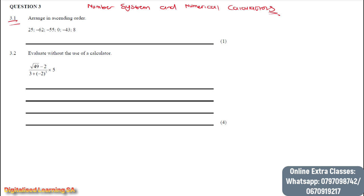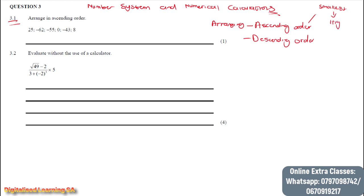Now let's go ahead and start working on question 3.1. Question 3.1 says arrange in ascending order. If we are arranging, there are two things: we can arrange in ascending order or we can arrange in descending order. Ascending order means from smallest to highest.